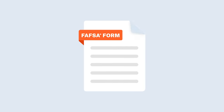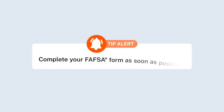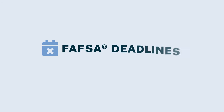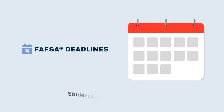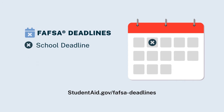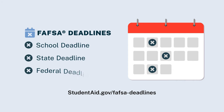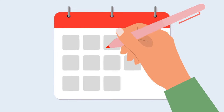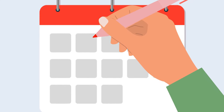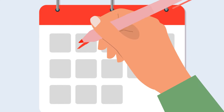To maximize your student aid, it's important to complete your FAFSA form as soon as possible. There are three FAFSA deadlines: one set by your school, one set by your state, and the federal deadline. Mark your calendars for the earliest deadline so that you don't miss out on the chance to receive student aid.